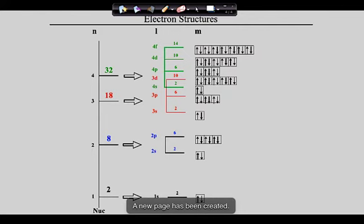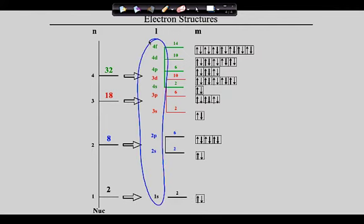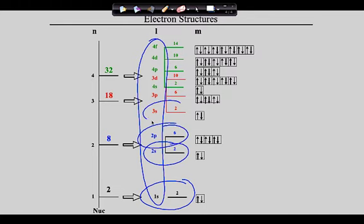The important thing to understand is the order that electrons fill. The first two electrons go in the 1s, then the next two in the 2s, then the next six in the 2p, then two in the 3s, then six in the 3p, then two in the 4s, then ten in the 3d, and it continues from there. But how are you going to remember that?